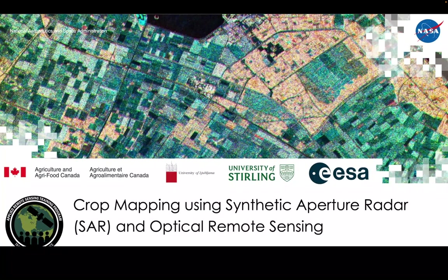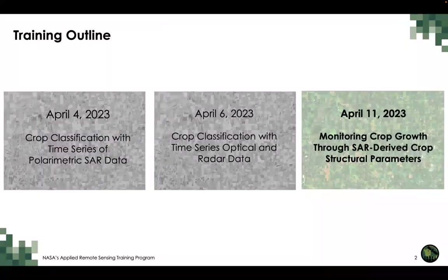Welcome to the third and final part of the RSET training: Crop Mapping using Synthetic Aperture Radar and Optical Remote Sensing. On Thursday, we learned from Dr. Christophe Ostier and Matej Rachic about time series analysis and analysis-ready data, and introduced the Sentinel Hub Statistical API and machine learning capabilities.